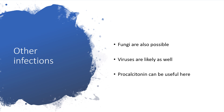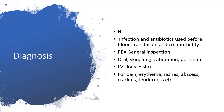We will know the answer from the value of procalcitonin. To make an accurate diagnosis of febrile neutropenia, we have to take a thorough history and physical examination. History should include past and present infections, antibiotics used, history of blood transfusion, any comorbidities, and history of cancer. General physical examination should cover the oral cavity, skin, lungs, abdomen, perineal area, and IV lines — checking for pain, erythema, rashes, abscess, crackles, and tenderness.